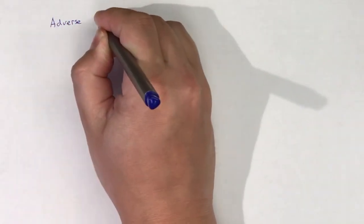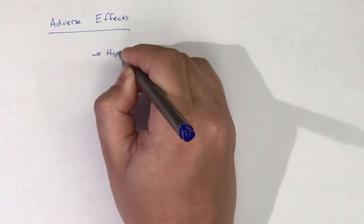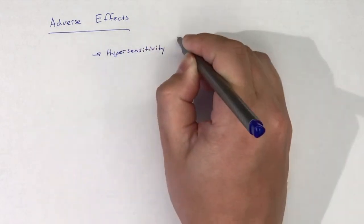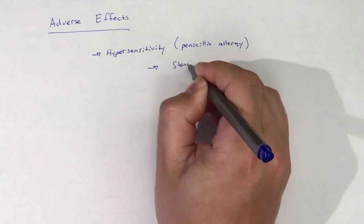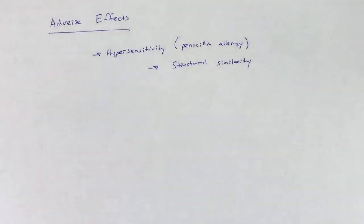Hypersensitivity to aminopenicillins is an issue just like with penicillin G. Patients allergic to penicillin G are likely allergic to aminopenicillins due to the high degree of structural similarity between the two drugs.